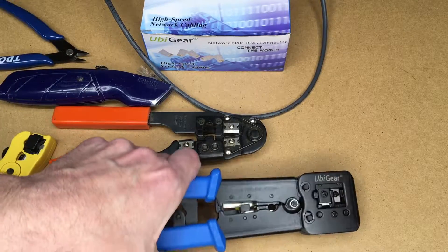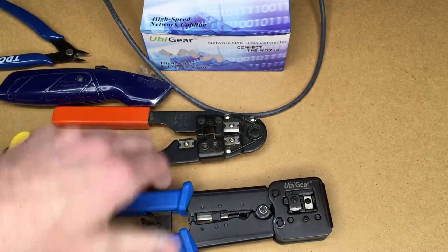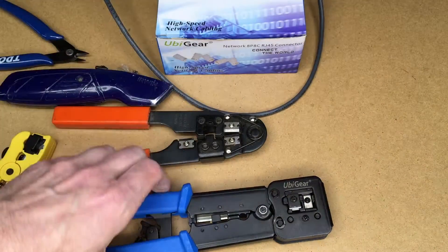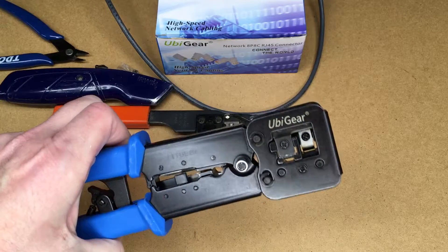Welcome. In a previous video, I took a look at these UbiGear pass-through RJ45 crimpers and the connectors for them too. And I really like these a lot. I'll put a link in the description. If you use that link, it helps me out a little bit. It doesn't cost you anything extra.